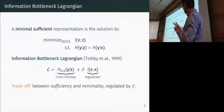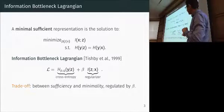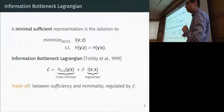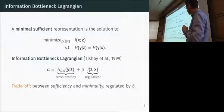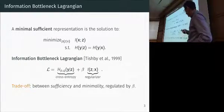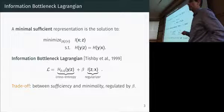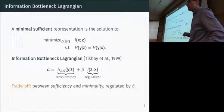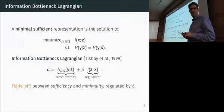You relax the constraint with a Lagrangian called the information bottleneck Lagrangian, which looks like this: given data x sampled from probability p, you look for a model q that minimizes the cross-entropy between p and q of the data given the representation — the fidelity term — while also minimizing the mutual information between the data and the representation — the complexity term. Interestingly, this is actually the loss function most commonly used in deep learning — empirical cross-entropy — but in deep learning the complexity term is not there.